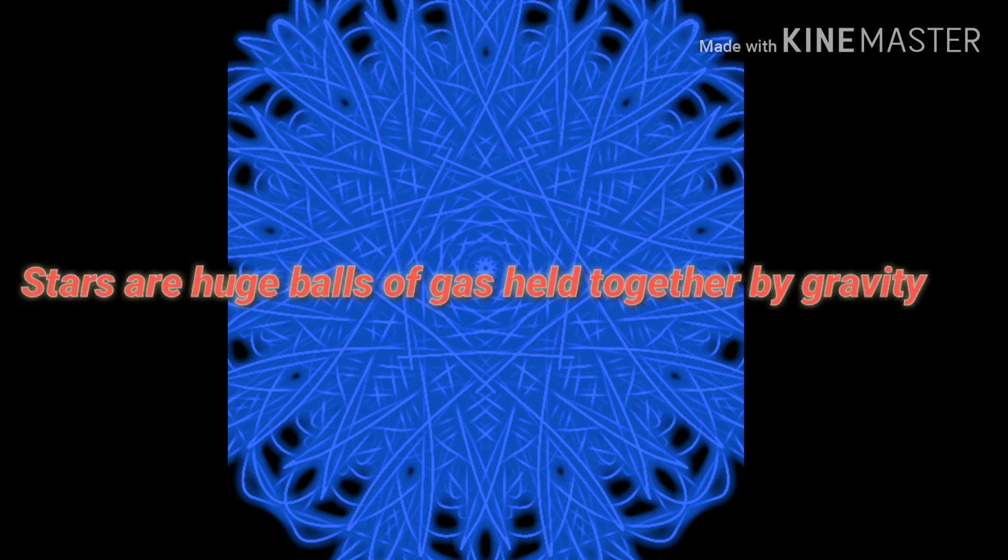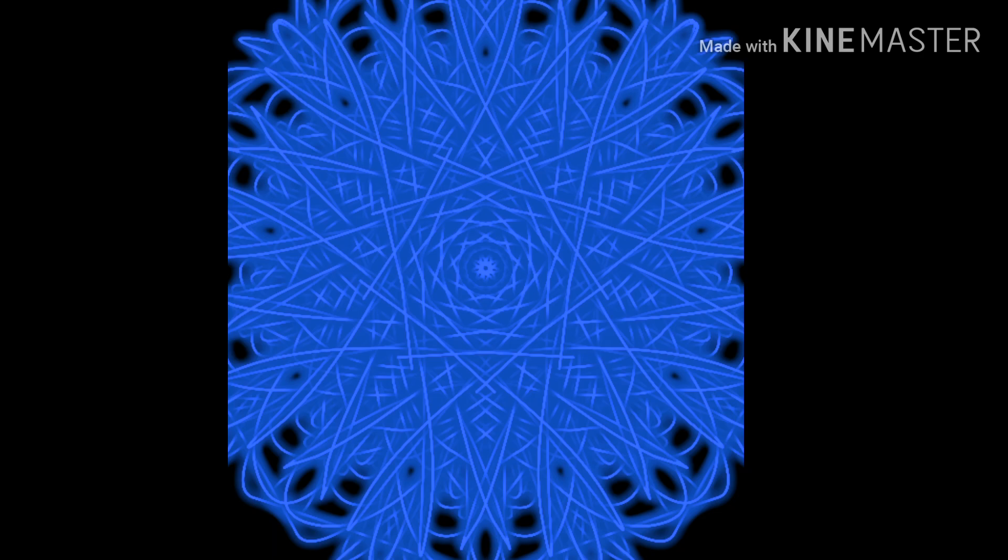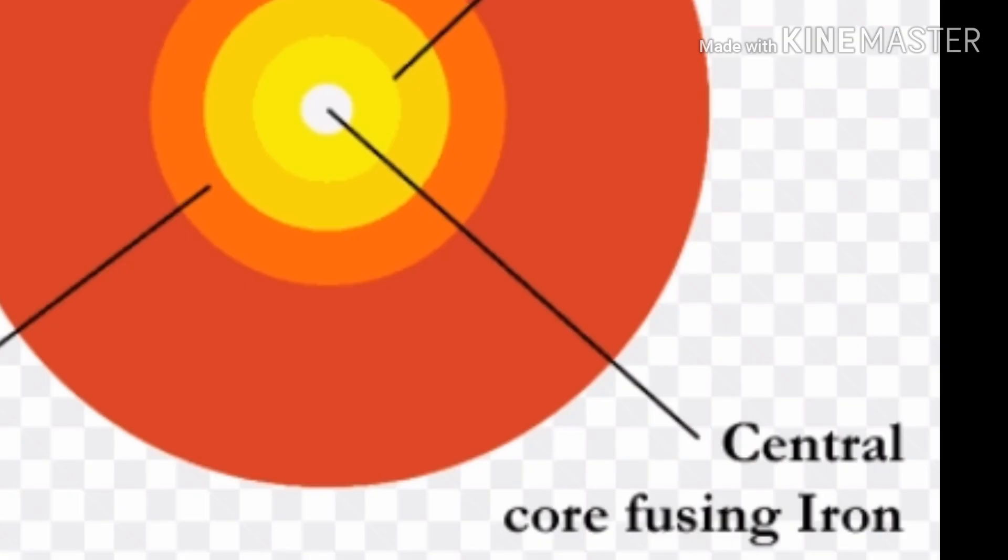A star is a huge ball of gas held together by gravity. The center of the star is extremely hot and it produces energy. This energy is visible light. It makes the star glow.